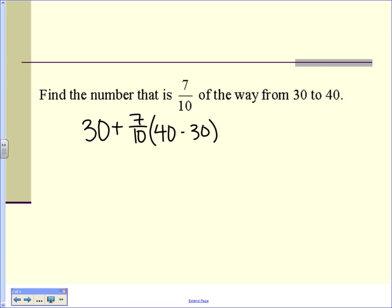Okay. It's a number line. We're starting at 30. How far do we have to go? Like 7 tenths from starting at 30, 7 tenths of the way to 40. That is actually your formula.